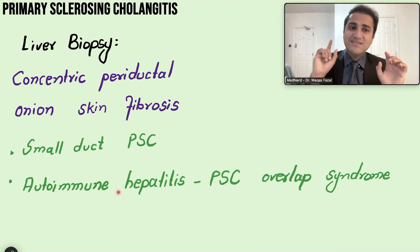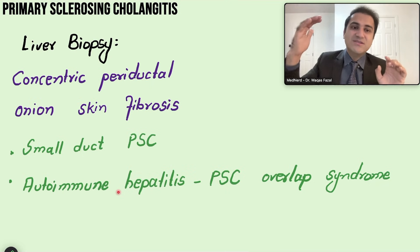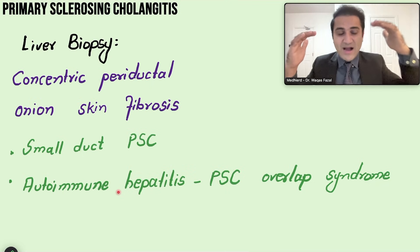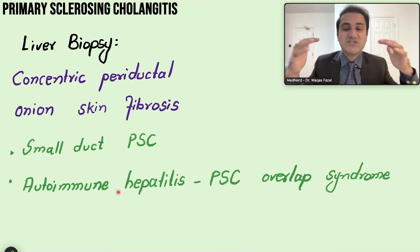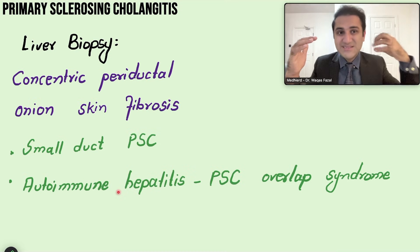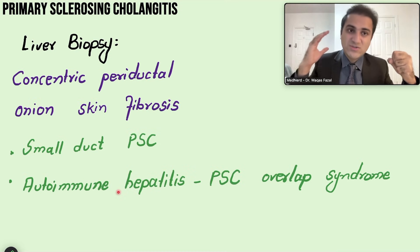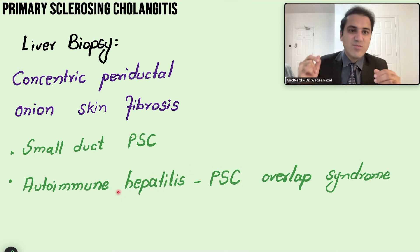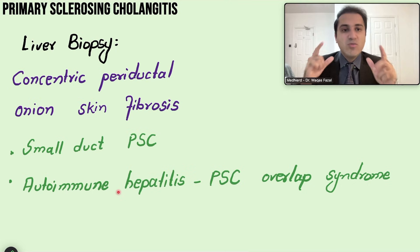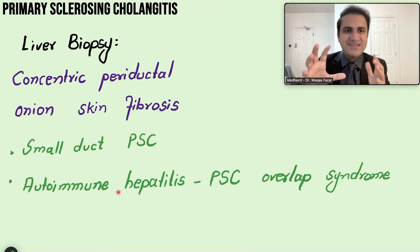You suspect an overlap with autoimmune hepatitis when both ALT and AST are highly elevated alongside elevated ALP and GGT — indicating inflammation in both the liver parenchyma and the ducts. In that case, liver biopsy can help identify both diseases. However, MRCP plus enzyme pattern plus exclusion of other causes remains the primary diagnostic approach.